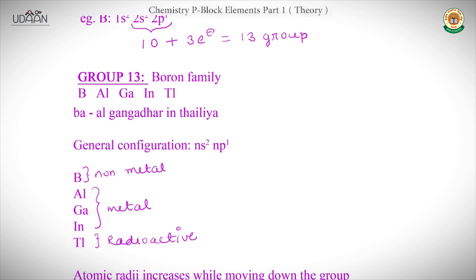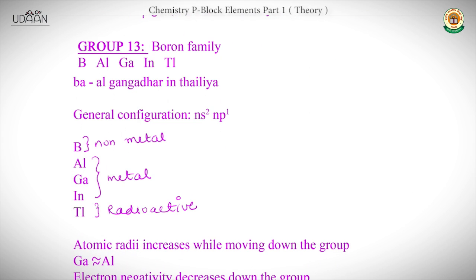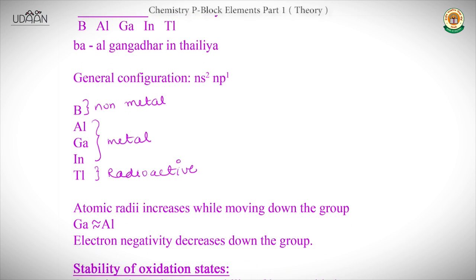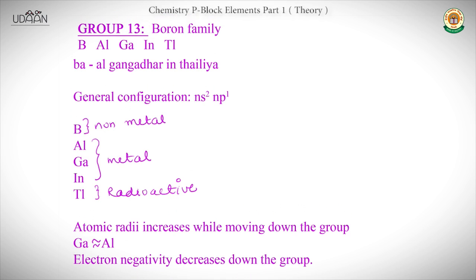Group 13 is also called the Boron family. The elements are Boron, Aluminium, Gallium, Indium, and Thallium. You can remember them with the mnemonic: 'Bal Ganga Dar in Thalia.' The general electronic configuration of group 13 is ns² np¹.